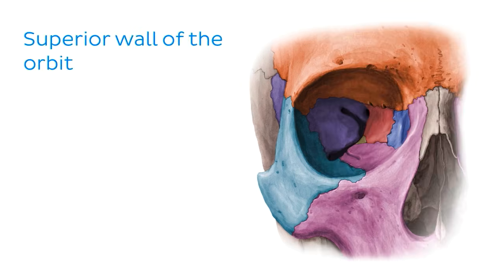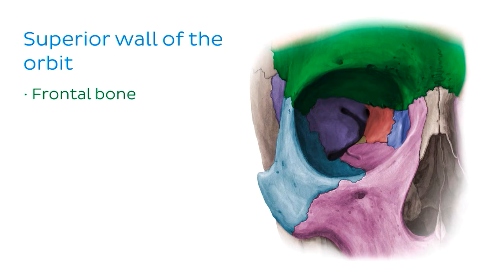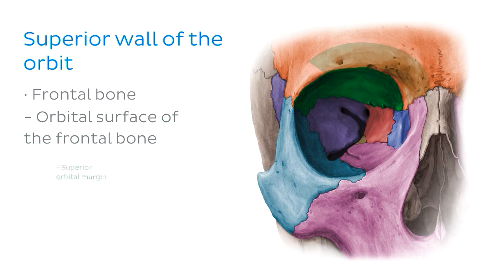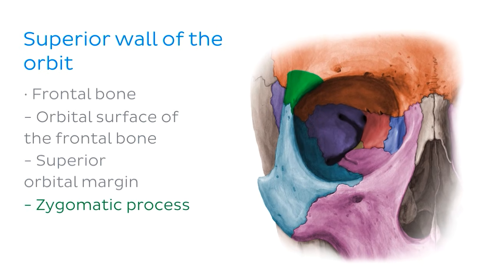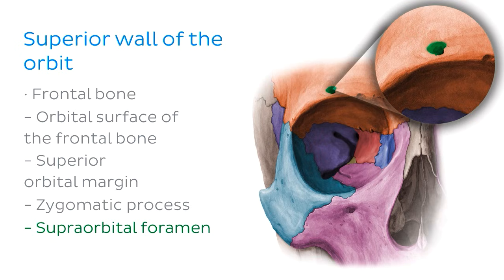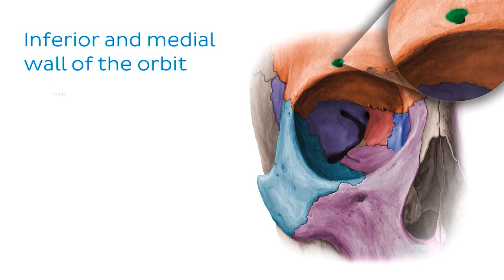We've come to the end of our tutorial on the bones of the orbit. To summarize: we began with the superior wall or roof of the orbital cavity, where we discussed the frontal bone — the large bone of the forehead. We identified relevant parts and landmarks, including the orbital surface of the frontal bone, the superior orbital margin, the zygomatic process which articulates with the zygomatic bone at the frontozygomatic suture, and the supraorbital foramen or notch, which gives passage to the supraorbital vessels and nerves.